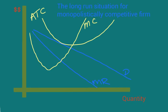The graph we just looked at a second ago is a short run situation for a monopolistically competitive firm, because we noticed that in that graph, the firm was actually making a profit. In the long run, we say that monopolistically competitive firms are not able to make an economic profit. In other words, they're not able to make an above normal profit.